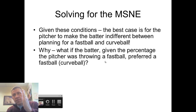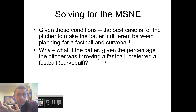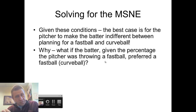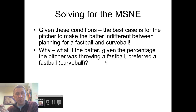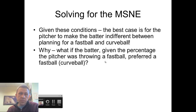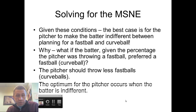If the batter looks at hitting a fastball and hitting a curveball and says, wow I get on base more by planning for the fastball, that means the batter should just plan for the fastball every time — the pitcher is being exploited. So the pitcher needs to throw slightly more curveballs, because if the batter is planning for the fastball, they will do far worse when the pitcher throws a curveball, which is good for the pitcher. So if the batter is not indifferent, the pitcher needs to adjust the amount of fastballs versus curveballs to make the batter indifferent.